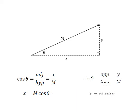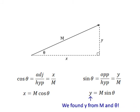Similarly, sin theta equals opposite over hypotenuse equals y over m. Therefore, y equals m sin theta, and hence we managed to find the vertical component.